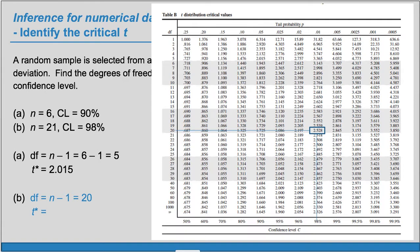So for df is 20 and our confidence level is 98%, where those meet at 2.528. So that is our t-star here.